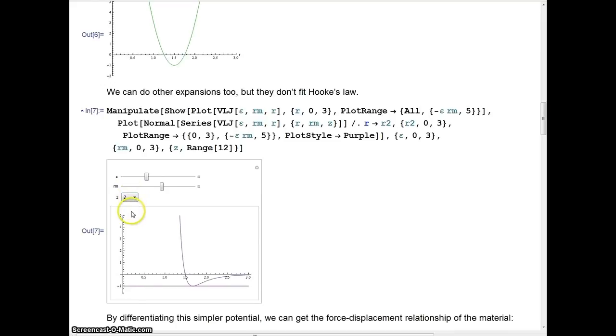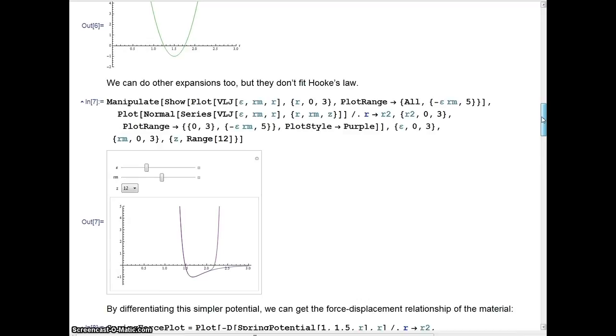The other ones are just better and better approximations of the actual potential. Mathematica supposedly can do negative powers, but I'm not seeing that here, so the actual perfect model would be, obviously, 1 over r to the 12th, which is r to the negative 12.